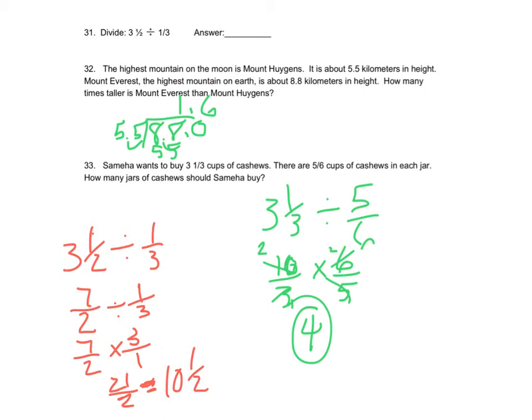You can solve this one almost probably in your head, because 5/6 is almost a full cup, so you're going to need 3 of those to get to 3 cups of cashews. But you're going to be short, so you have to buy another one. The problem is you're not certain if that's enough. So if you actually do the math, 3 and 1/3 divided by 5/6, using our keep-change-flip method.